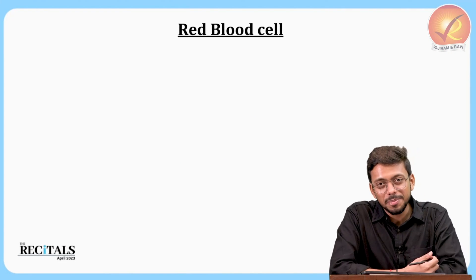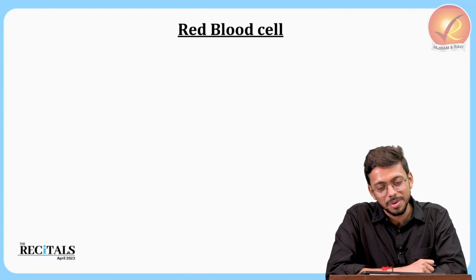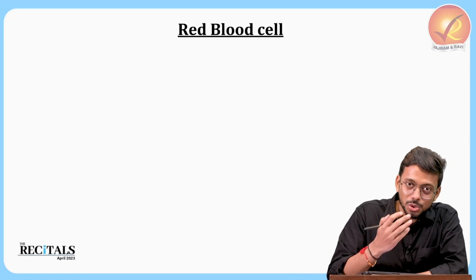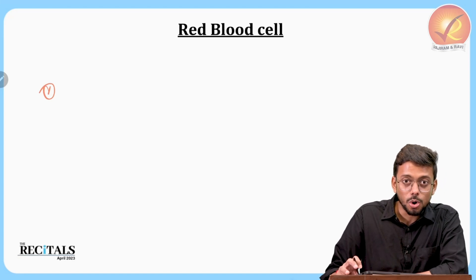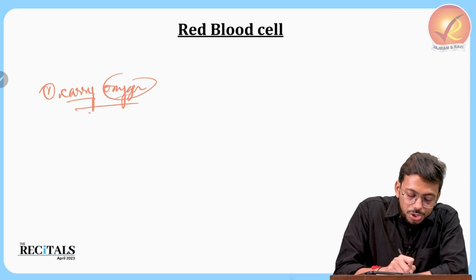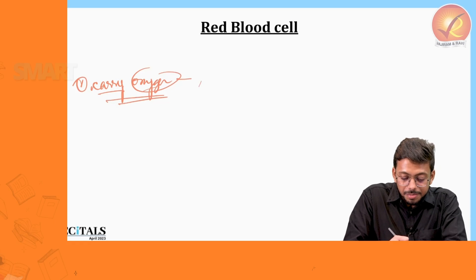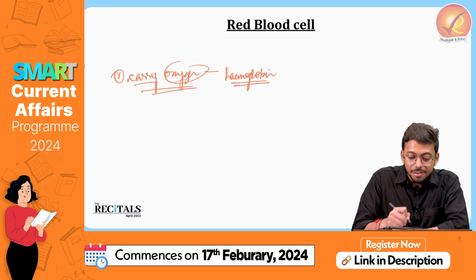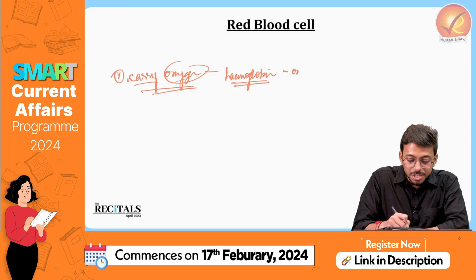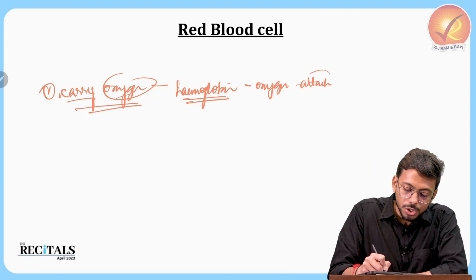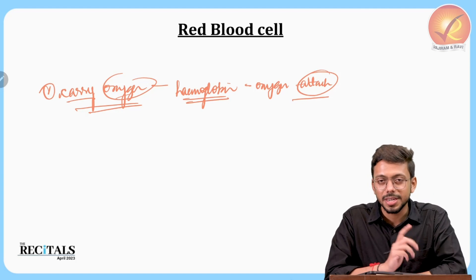When talking about white blood cells, we should also cover red blood cells. Red blood cells carry oxygen to various parts of the body — that is their most important function. They do this with the help of hemoglobin, a molecule to which oxygen attaches and is then transported throughout the body.